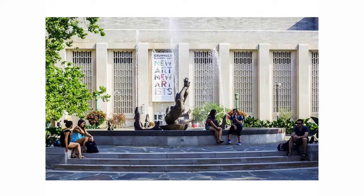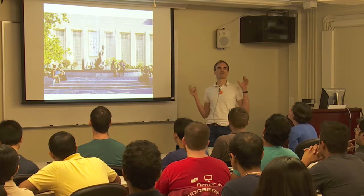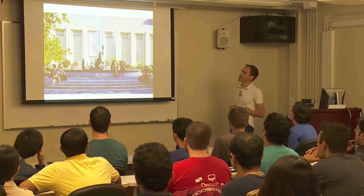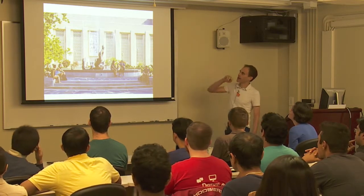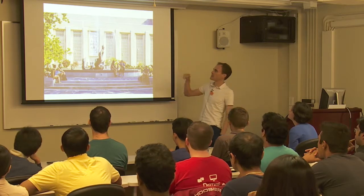The goal in computer vision is really easy to state and really, really difficult to do. The idea is given an image like this one, as soon as you or I look at this, we immediately start understanding the scene. Without even thinking about it, we recognize the building, the fountain, we see the people.